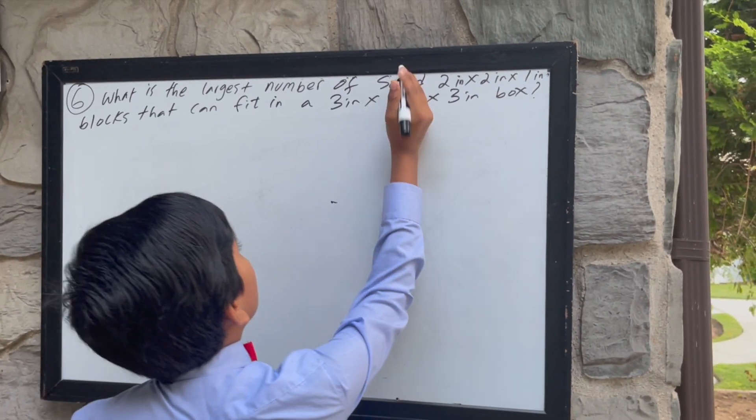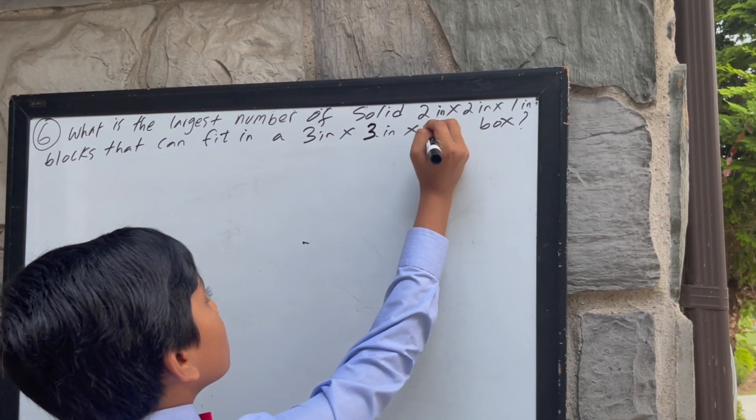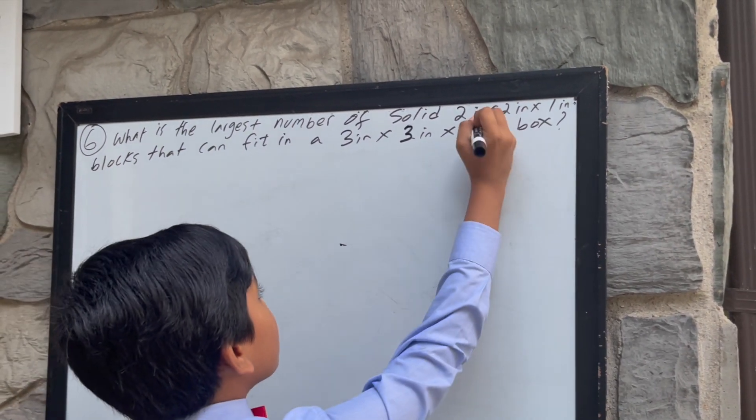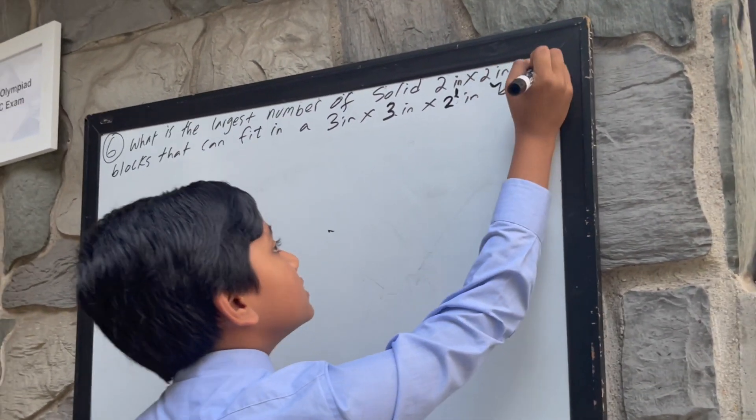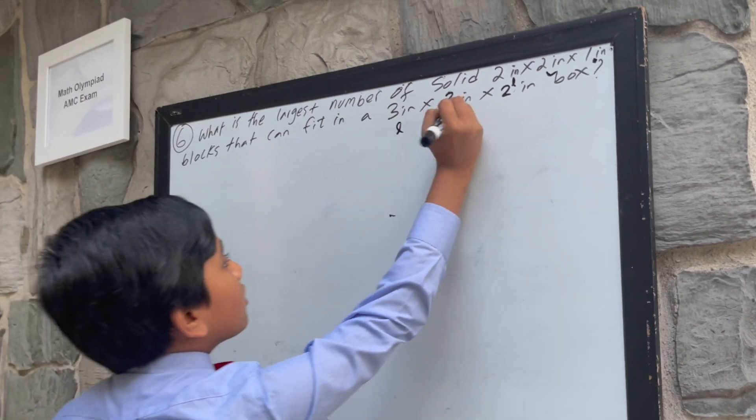Let's make it 3 by 3 by 2, just to make it cleaner. And let's say this is the length, that's the width, and this is the height. Length, width, height.